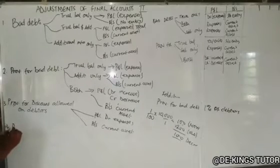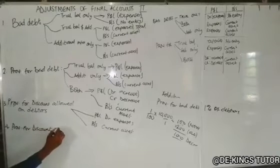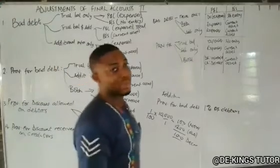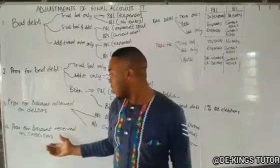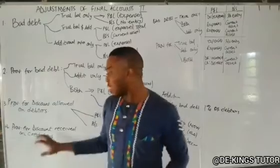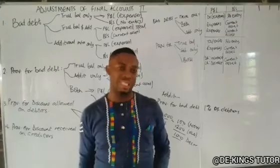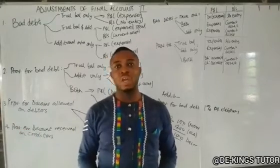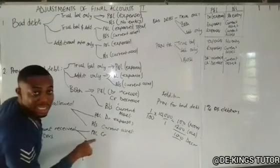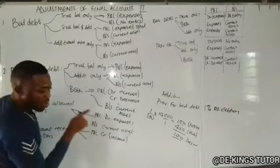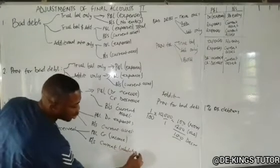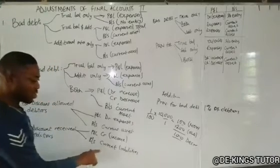We also have provision for discount received on creditors. The same way we give discount to our debtors, we also receive discount from our creditors. Provision for discount received on creditors is a provision made for discounts expected to be received. We set this money aside so that the creditor value is not overstated in the balance sheet. When this is given, post to the profit or loss account on the credit side as income. In the balance sheet, it is posted under current liabilities to deduct from the creditors.